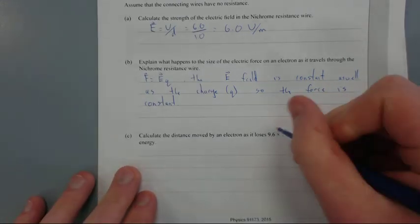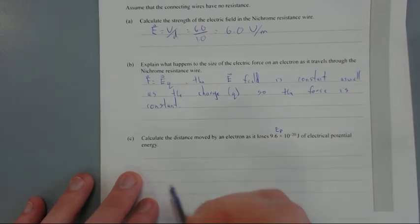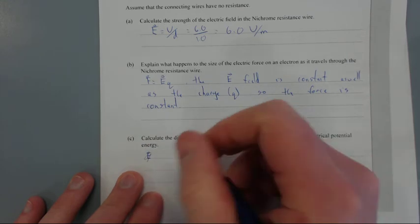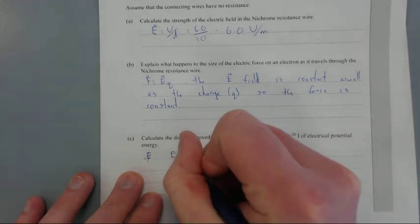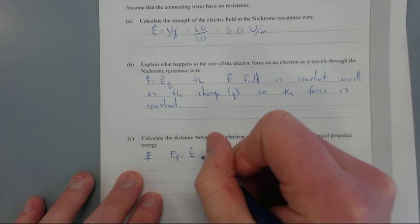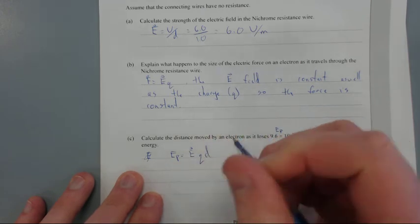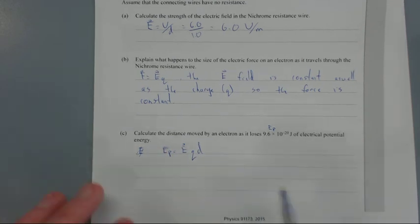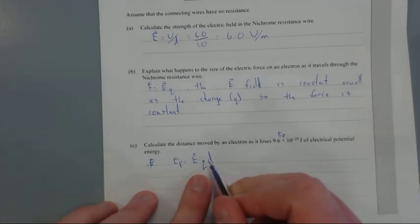Electric potential Ep equals the electric field E times the charge Q times the distance d. It comes straight off our formula sheet. We're trying to find the distance, so let's rearrange for distance.